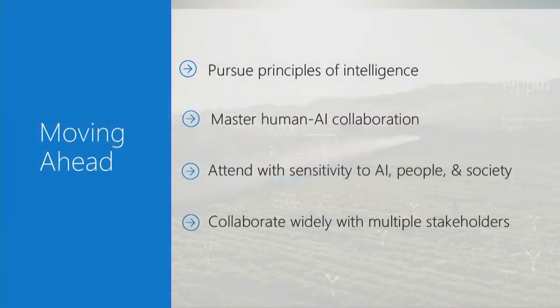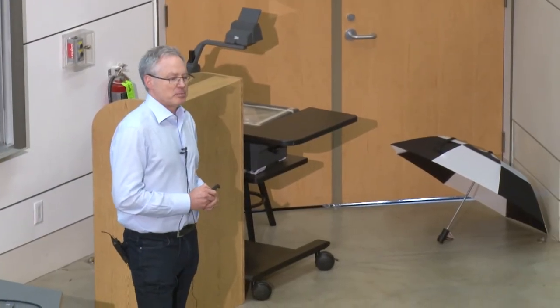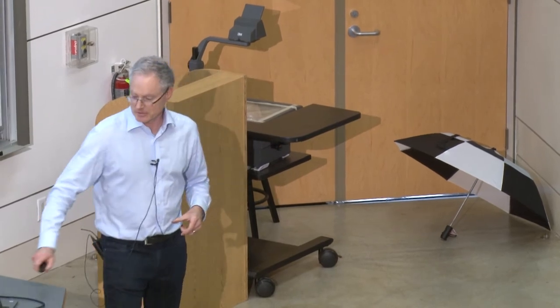The goal here is to pursue principles of intelligence — core intellectual work in computer science — to master human-AI collaboration at the intersection of psychology, human factors, computer science, and design. We want to attend with sensitivity to AI's impact on people in society, and collaborate widely with multiple stakeholders on the influences of AI for people in society.